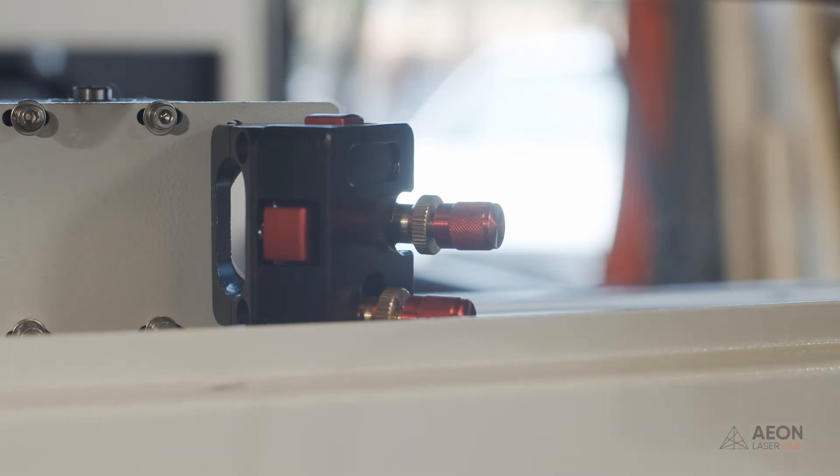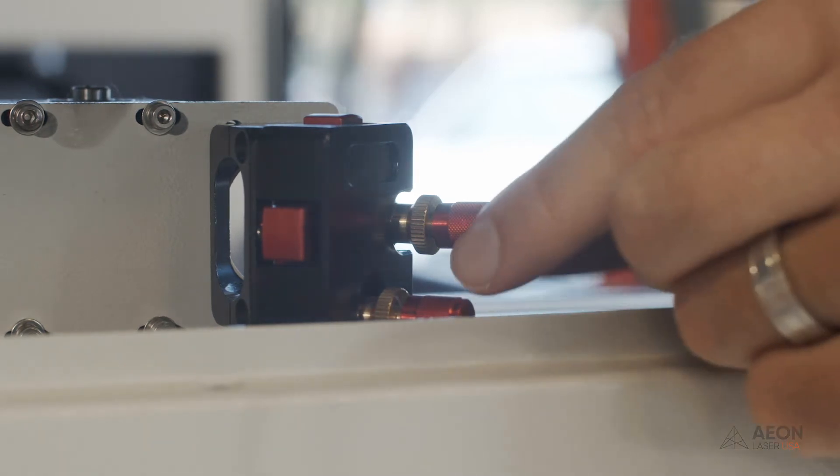Now, if you remember from the last mirror, the knob on the right is what adjusts the laser right to left. And if we turn it clockwise, because it's located on the right, the beam will also go to the right. If we turn it counterclockwise, the beam will go to the left. So let's go ahead and turn it counterclockwise a bit.